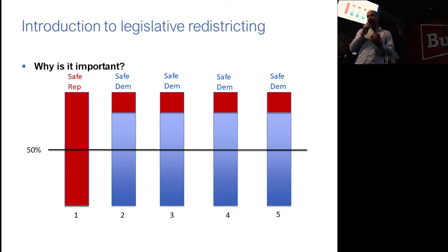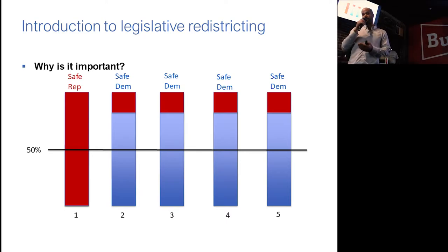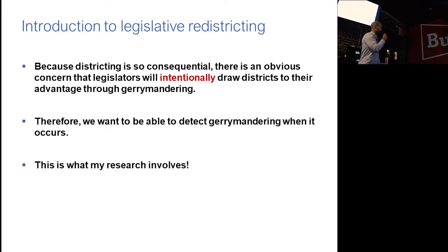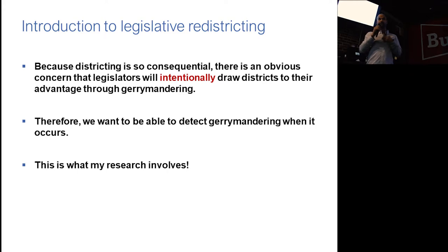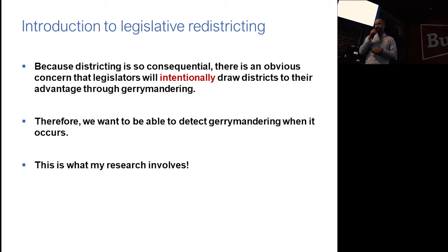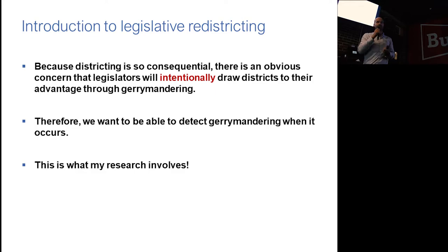The point is that depending on how you draw the districts, you can get very different outcomes. That is powerful if you control how the districts are drawn. Because districting is so consequential, there is an obvious concern that legislators will intentionally draw districts to their advantage through gerrymandering. So one of the things we want to do is be able to detect gerrymandering when it occurs, and understand its effects — that is part of what my research involves.